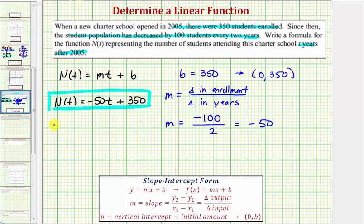Just to verify this, notice how if we determine the function value n(0), which should be the starting enrollment of 350, we'd have negative 50 times 0 plus 350, which does equal 350. And if we find n(2), we should get the student enrollment two years after the starting year, which we know should be 100 less students. So we'd have negative 50 times 2 plus 350, which would be negative 100 plus 350, which does give us 250, 100 less students than two years before.